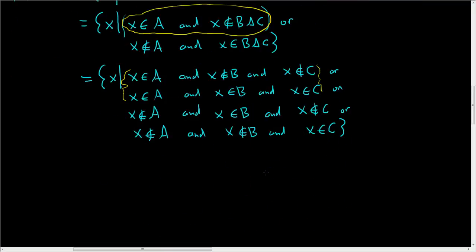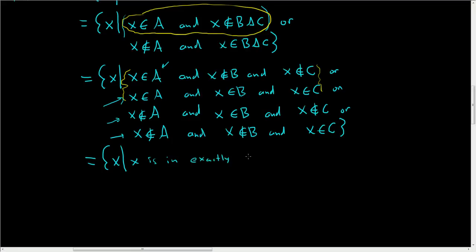And here is the really cool part. In the first case, X is only in A and not in the others. In the second case, it's in all three. In the third case, it's only in B. And in the last case, it's only in C. So X is in exactly one or three of A, B, C. We can write it that way: X is in exactly one or three of A, B, C.